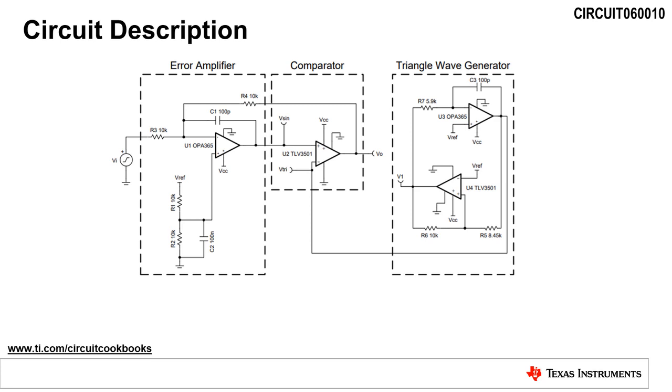An op amp and comparator are used in the block on the right to generate a triangular waveform, which is then output to the inverting input of the comparator in the comparator block. Passing the input voltage to the non-inverting pin of the comparator produces the PWM waveform. Providing the PWM waveform as negative feedback to the error amplifier block ensures high accuracy.